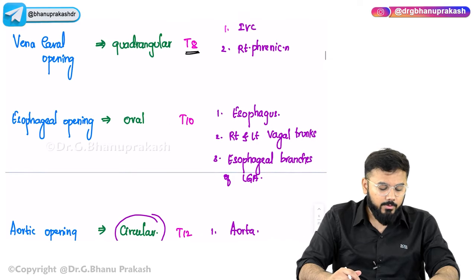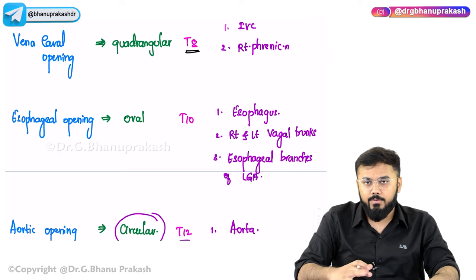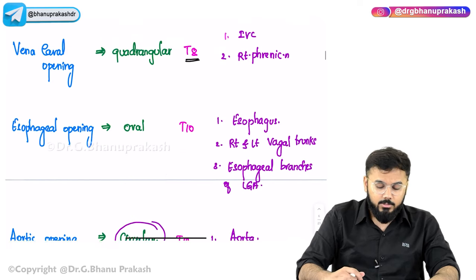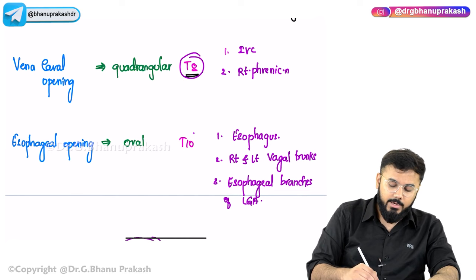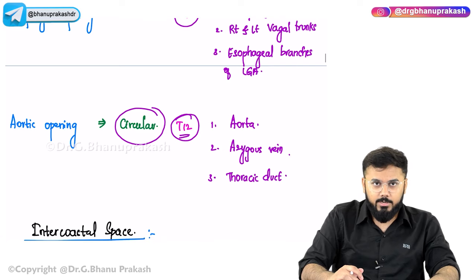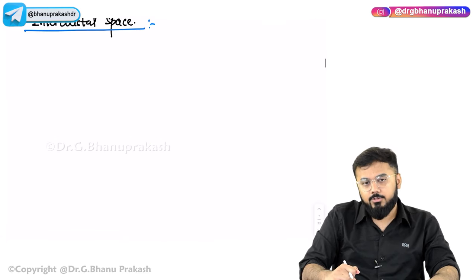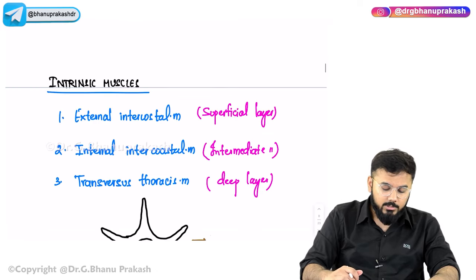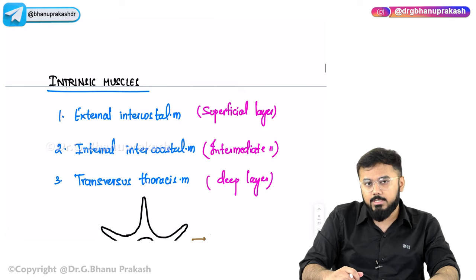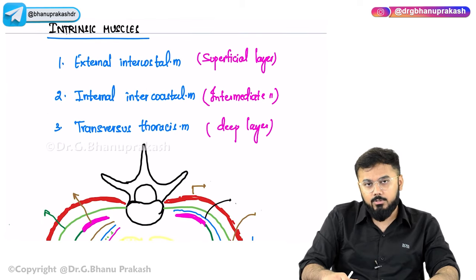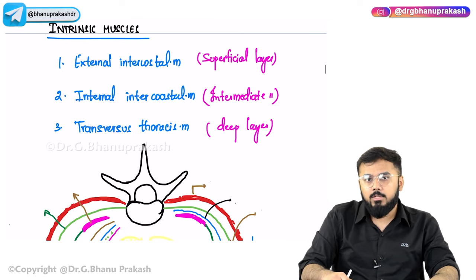To summarize: the Vena Caval opening is quadrangular at T8, the esophageal opening is oval at T10, and the aortic opening is circular at the lower border of T12. These are the three major diaphragmatic openings and the structures passing through them.